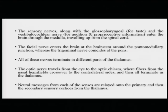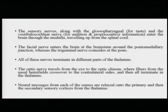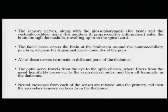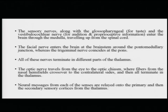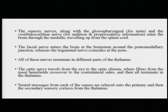The sensory nerves, along with the glossopharyngeal nerves responsible for taste and the vestibulocochlear nerve responsible for auditory processing and proprioceptive information about body balance, enter the brain through the medulla and then travel up the spinal cord. The facial nerve enters the brain stem around the pontomedullary junction, whereas the trigeminal nerve coincides at the pons. These are the ways how these important sensory nerves connect with the brain.